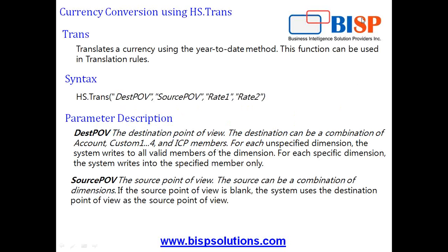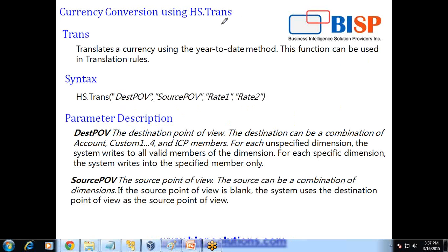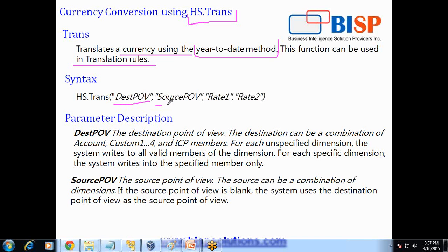In today's example, I am going to use a rule called hs.trans. Let's try to understand what the rule consists of and how many arguments it needs. hs.trans is the name of your rule — hs is the topmost object. It translates the currency using the year-to-date method, and this function can be used in a translation rule. The syntax takes destination point of view, source point of view, rate 1, and rate 2.